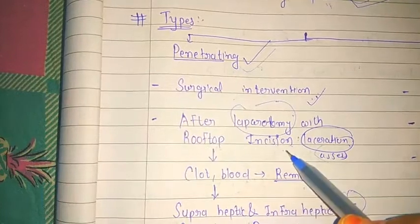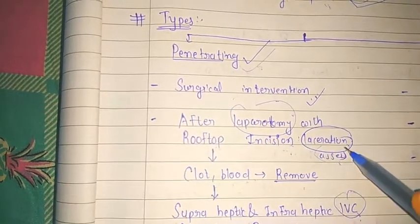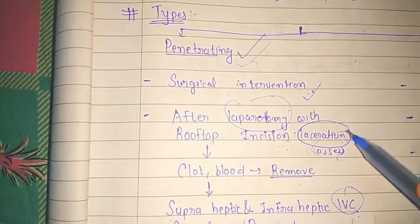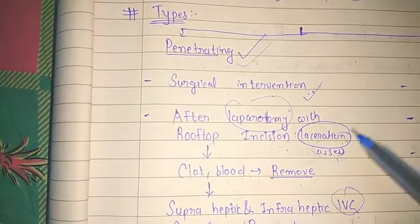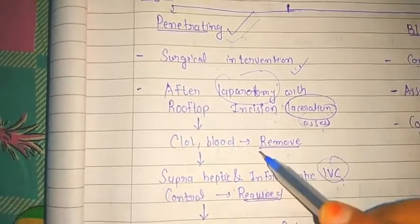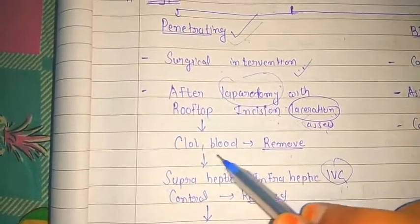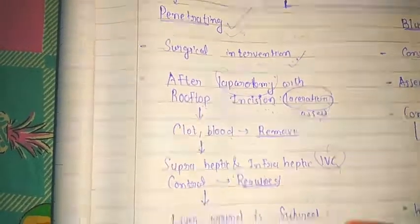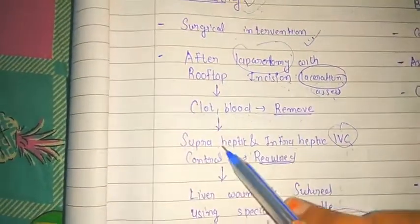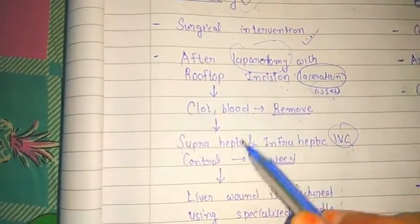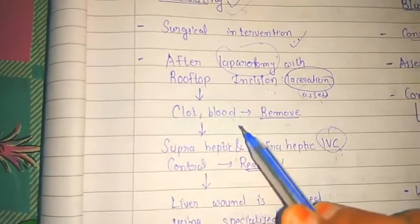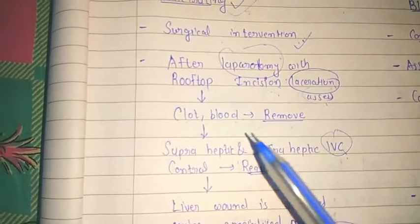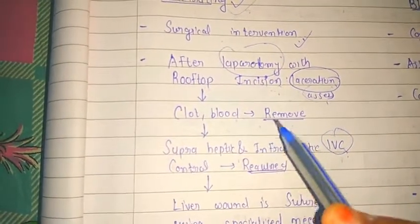Rooftop incision is necessary to assess the laceration — how much laceration is there. Then the clot and blood should be removed from the path. In liver injury, control of bleeding is a must.